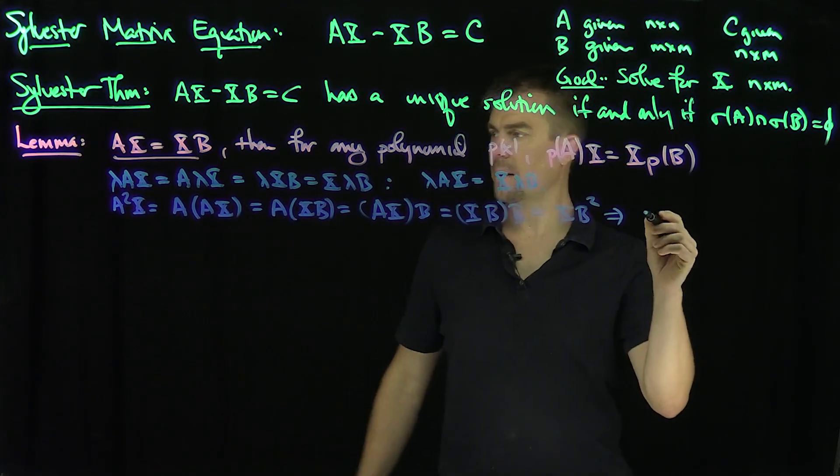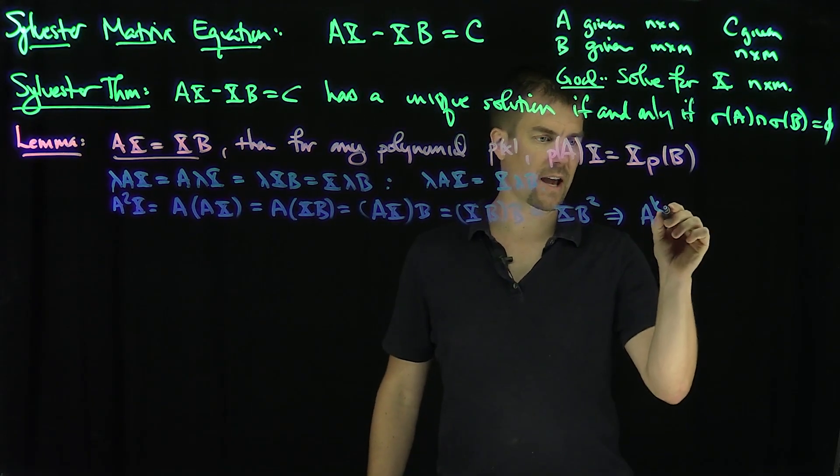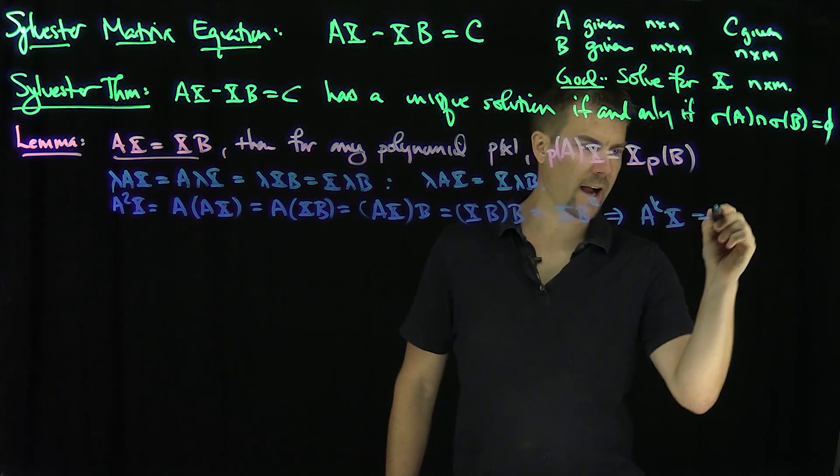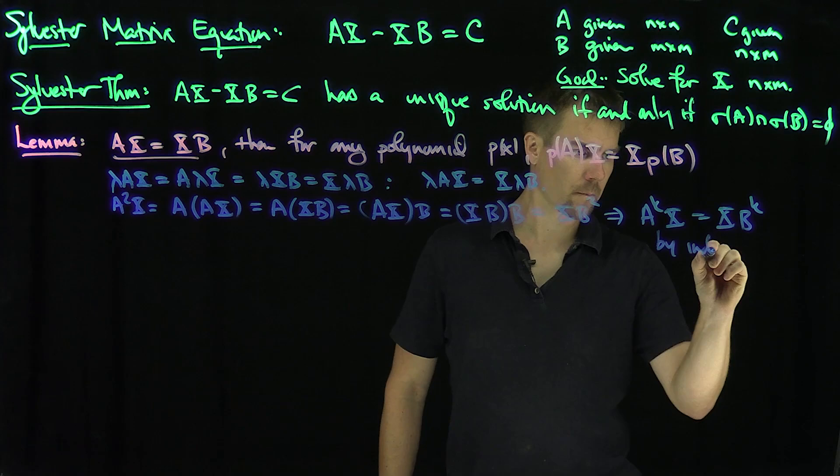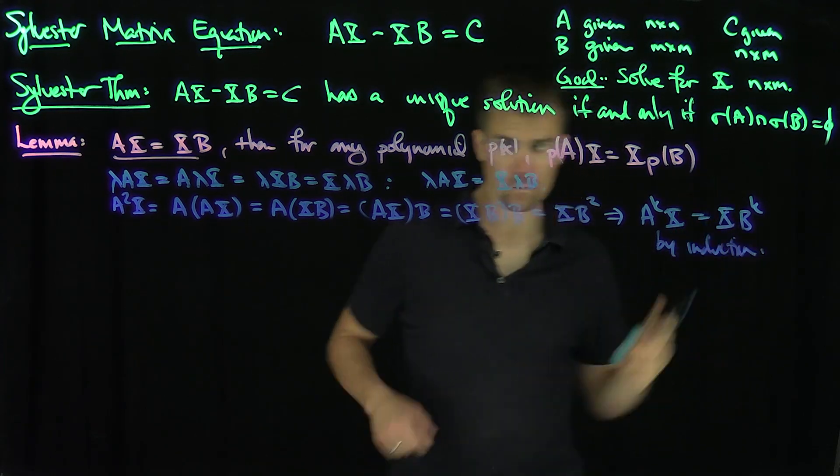So that implies by induction, by the same trick, I can have A to the k X equals X B to the k by induction.